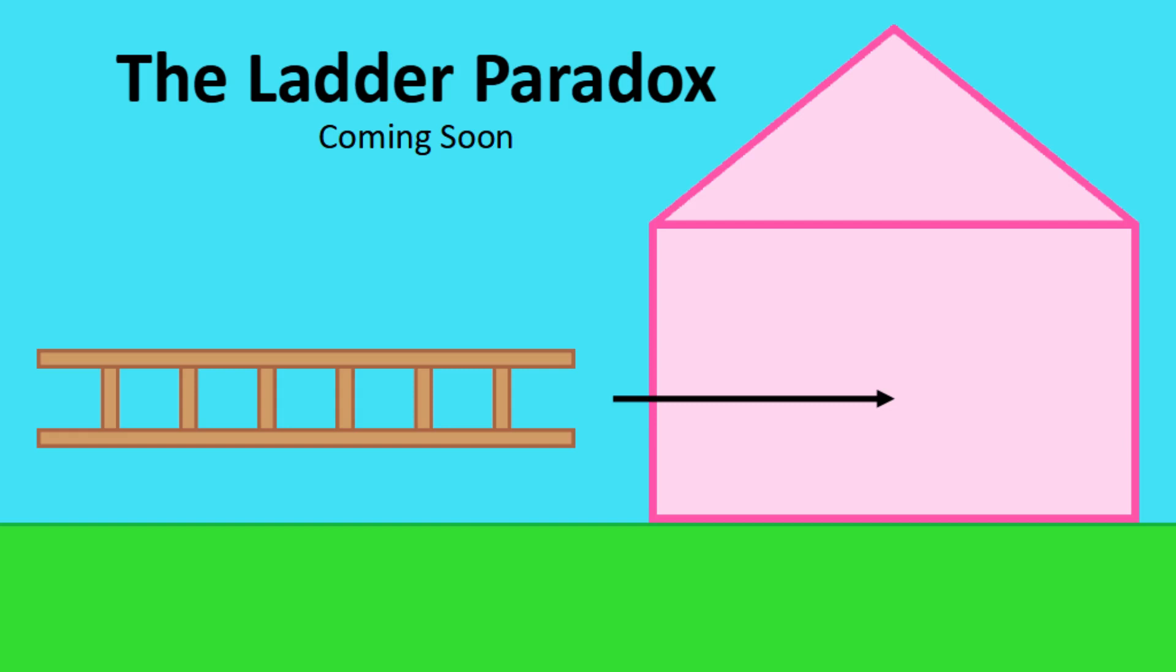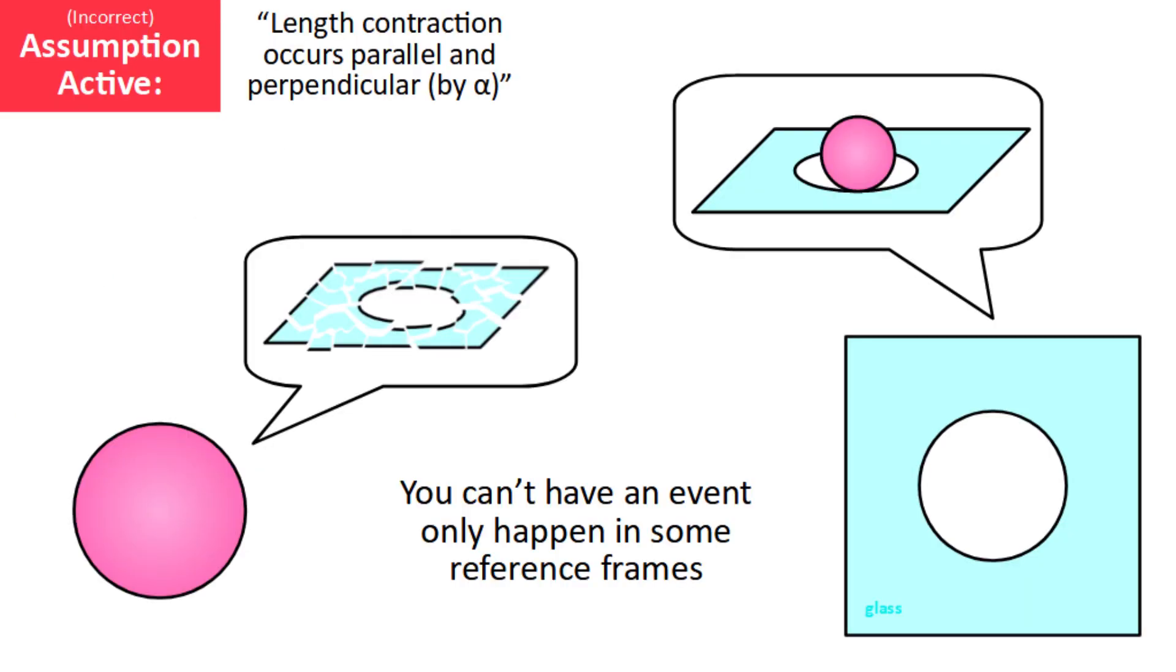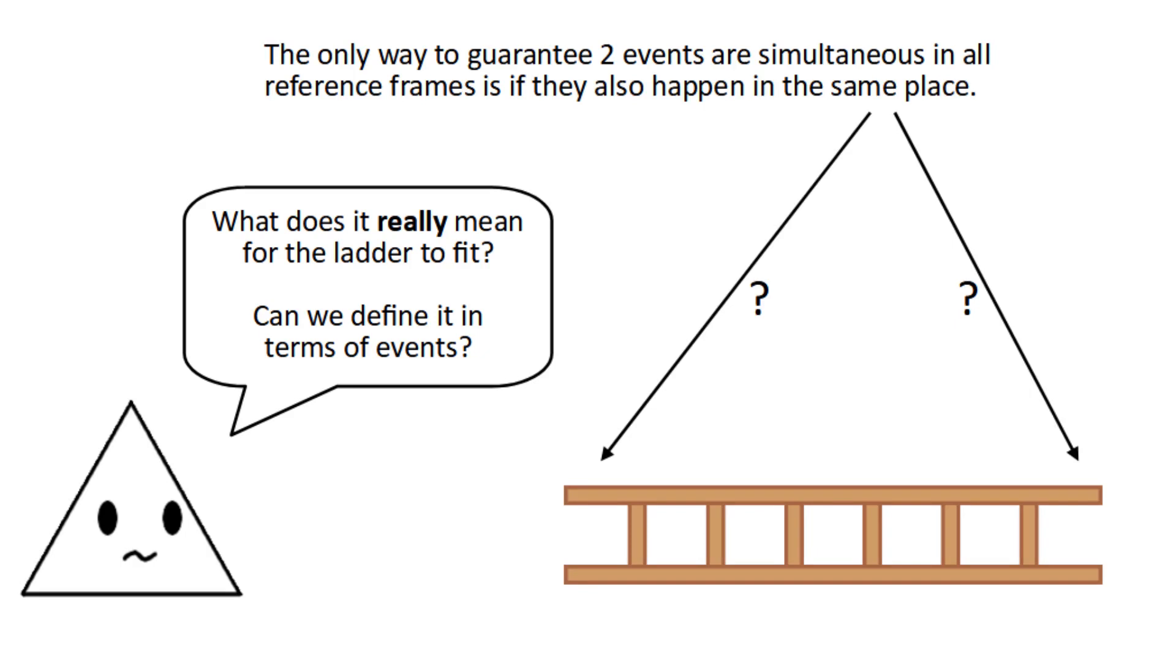In the next episode, we'll examine the situation in more detail, and see what makes it different than the case with the glass breaking. For now though, just know the key difference is that with the glass shattering, it was an event that happened in one reference frame, but not in another. With the ladder though, you'll never get anything like that, and to see why, you have to redefine what it means for the ladder to fit, and then apply relativity of simultaneity.